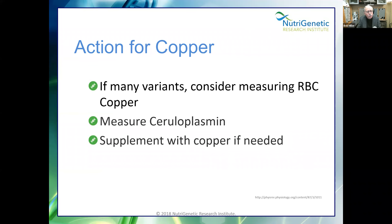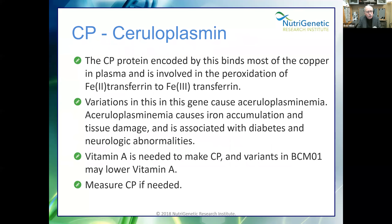Ceruloplasmin protein binds most of the copper in plasma and is involved in the oxidation of Fe²⁺ to Fe³⁺. Variations cause iron accumulation and tissue damage and are associated with diabetes. Vitamin A is also needed to make ceruloplasmin, so keep an eye on that. BCMO1 governs the conversion of beta-carotene to vitamin A. Have you ever seen someone drinking a lot of carrot juice who turns orange? They likely have trouble converting beta-carotene to vitamin A — one good alternative source is cod liver oil.